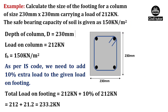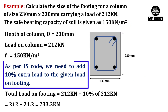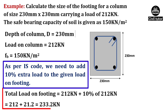So, we have the given data. As per IS code, we need to add 10% extra load to the given load on footing. So, the total load on footing will be equal to load on column, which is 212 kN, plus 10% of 212 kN, which will be equal to 233.2 kN.